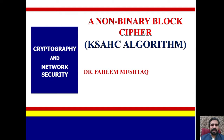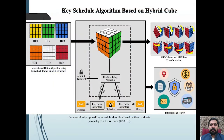This is part of the lecture series on cryptography and network security. As you know, there are three major key components for any cryptographic algorithm: first is the encryption algorithm, second is the decryption algorithm, and third is the key scheduling algorithm. In the previous lecture we discussed the HICE encryption and decryption algorithm.